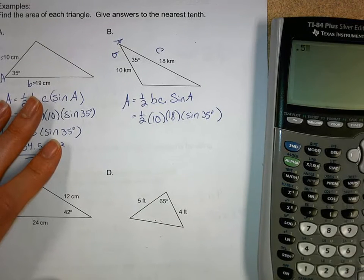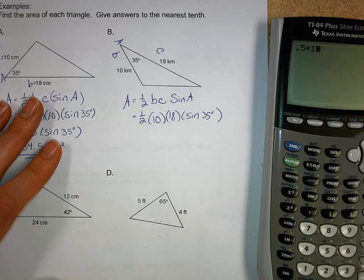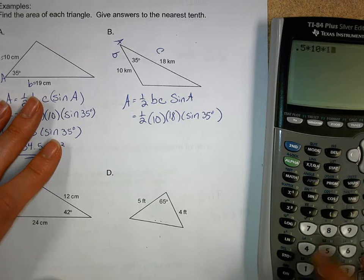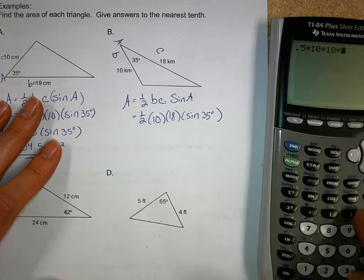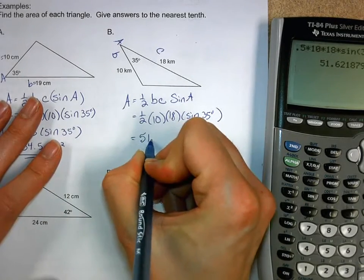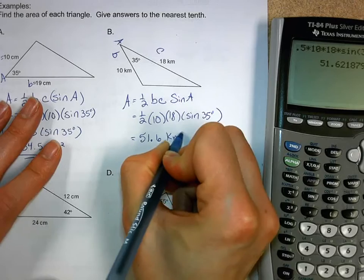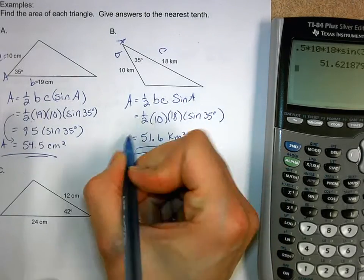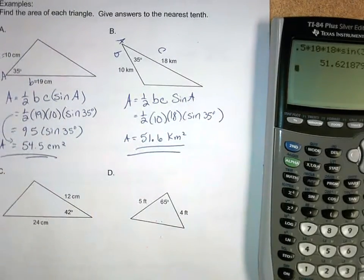I'm going to go 0.5 for one half times 10 times 18 times the sine of 35. What do we get here? 51.6 square kilometers. It could help you out quite a bit.